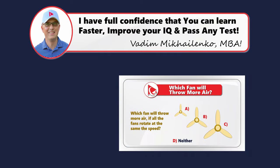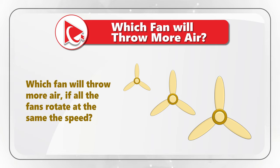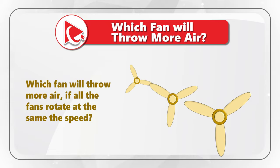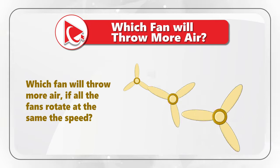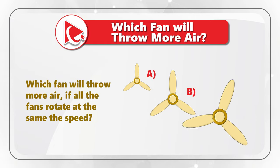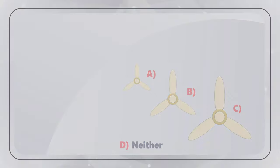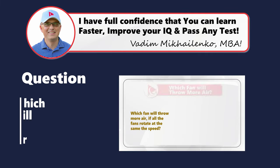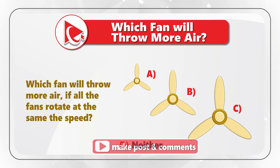This is one of the most exciting questions because it allows you to test your analytical skills and understanding of physics. You need to determine which fan throws more air if all the fans rotate at the same speed. The choices are Fan A, Fan B, Fan C, and Choice D — neither fan. Take a close look to see if you can come up with the answer. I'm moving forward to share my version, and if you have a better way to solve it, please post in comments.